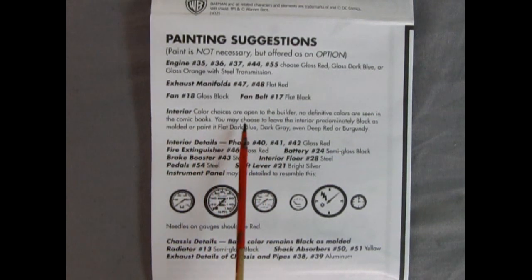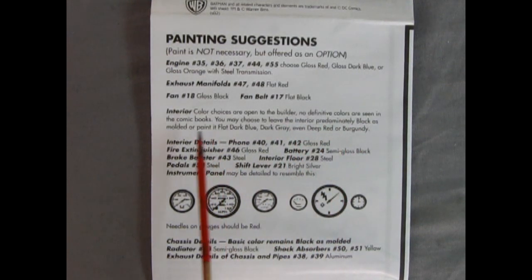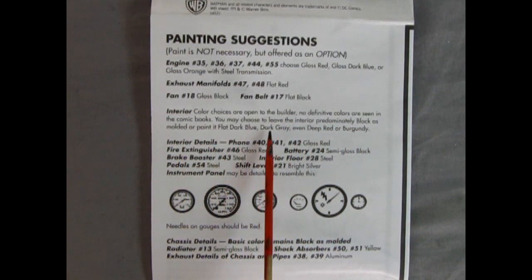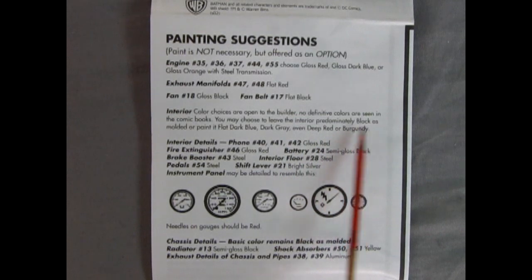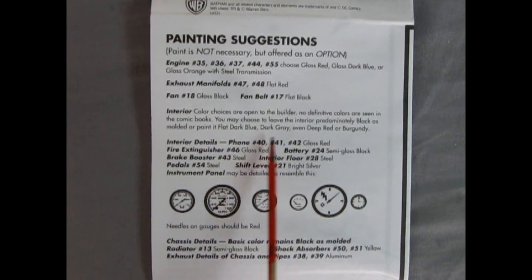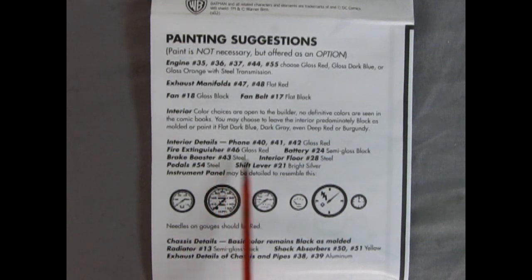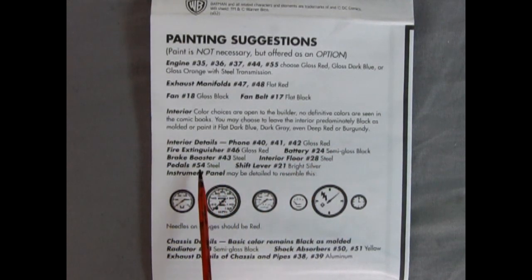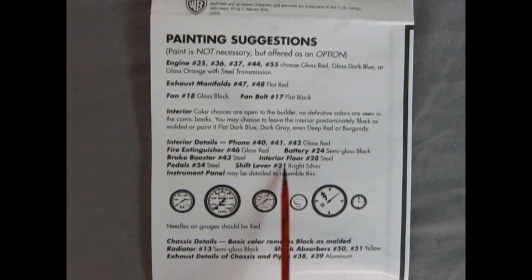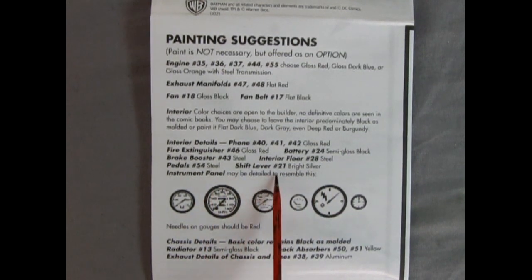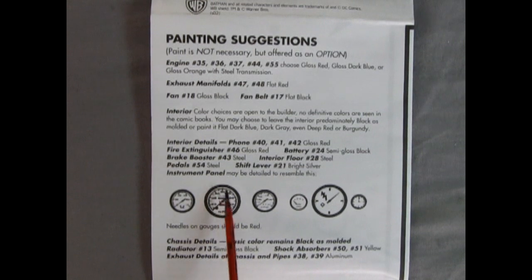Interior color choices are open to the builder. No definitive colors are seen in the comic books. You may choose to leave the interior predominantly black as molded or painted flat dark blue, dark gray, even deep red or burgundy. Interior details are gloss red. Fire extinguisher, gloss red. The battery is semi-gloss black. The brake booster is steel. The interior floor is steel. Pedals are steel. The shift lever is bright silver. And the instrument panel may be detailed to resemble this. Needles and gauges should be red.